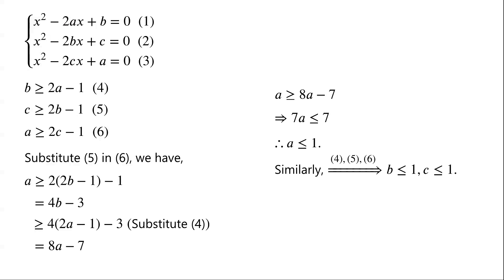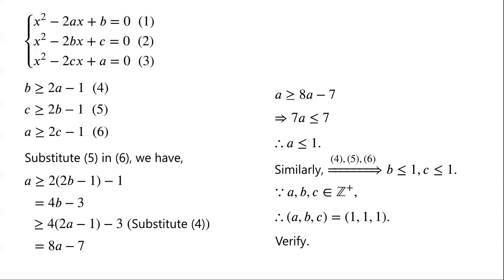Similarly, from inequalities 4, 5, and 6, we can derive that b is less than or equal to 1 and c is less than or equal to 1. Since a, b, and c are positive integers, we have a = b = c = 1. It is easy to verify that when a = b = c = 1, each equation becomes x squared minus 2x plus 1 equals 0, that is (x minus 1) squared equals 0, so x equals 1, which is a positive integer. Therefore, a = b = c = 1 is the only solution.